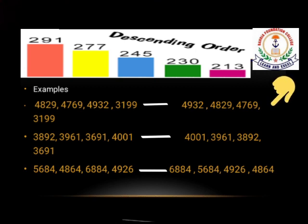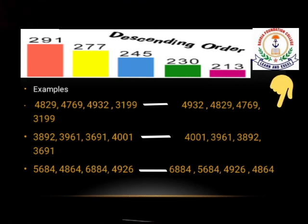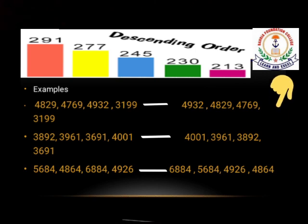Then the smaller number 4769, and then comes the smallest number 3199. Next example is 3892, 3961, 3691 and 4001. First comes the largest number, that is 4001, then 3961, then 3892, and the smallest number is 3691.